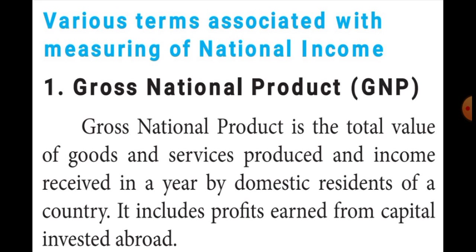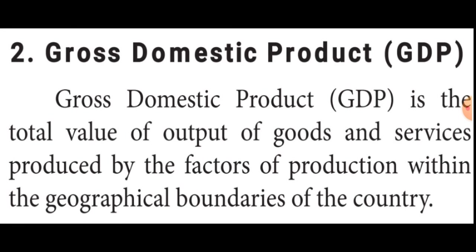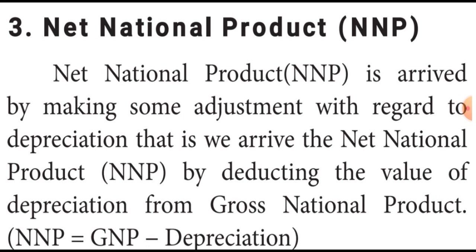Gross domestic product means through one particular country's production area, how much they are producing is calculated in the gross domestic product. Thirdly, net national product is arrived at by making some adjustment with regard to depreciation — we arrive at the net national product by deducting the value of depreciation from gross national product. NNP is equal to GNP minus depreciation.